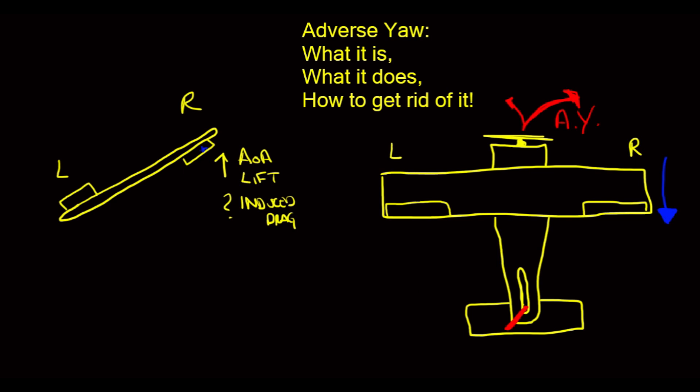Obviously, as we relax the ailerons, once we're established in this bank, we don't just hold the ailerons because we'll just keep rolling. As we reduce and the ailerons are back neutral, then we can neutralize our rudder because we don't need to hold for that yaw anymore.